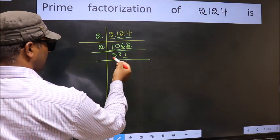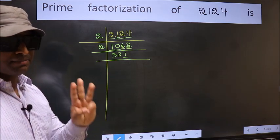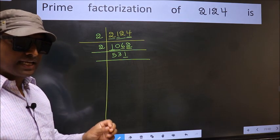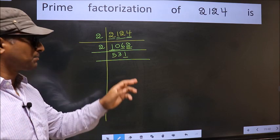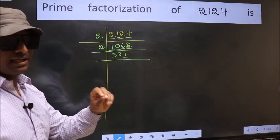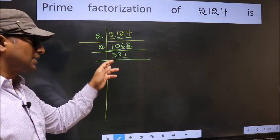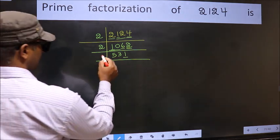Now the last digit 1 is not even, so not divisible by 2. Next prime number 3. To check divisibility by 3, we should add the digits. What I mean is: 5 plus 3 plus 1, we get 9, and 9 is divisible by 3, so this number is also divisible by 3. So take 3 here.